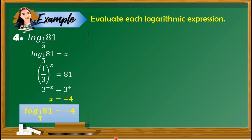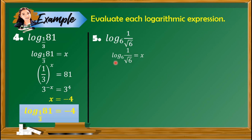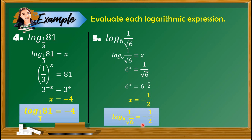Find the value of log base 6 of 1 over the square root of 6. Equate to x and convert to exponential form: 6 raised to x equals 1 over the square root of 6. Change the radical to exponential form: the square root of 6 is 6 raised to 1/2. Applying the negative exponent rule, this becomes 6 raised to negative 1/2. Since the bases are the same, x equals negative 1/2. So log base 6 of 1 over the square root of 6 equals negative 1/2.